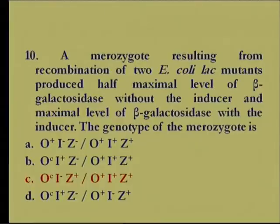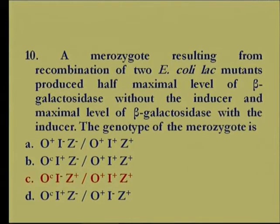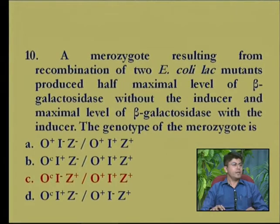Welcome back to the discussion on regulation of gene expression in prokaryotes. We were discussing MCQs on the lac operon concept. The next question involves a merozygote resulting from recombination of two E. coli lac mutants, which produced half-maximal level of beta-galactosidase without the inducer and maximal level of beta-galactosidase with the inducer. Merozygote means partial diploids, and the genotypes are shown.